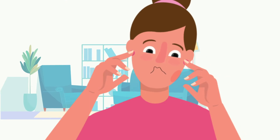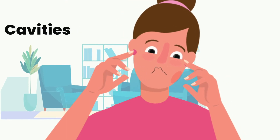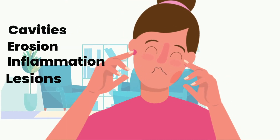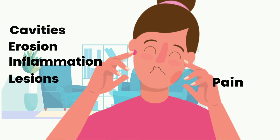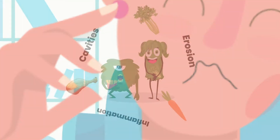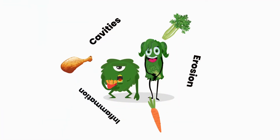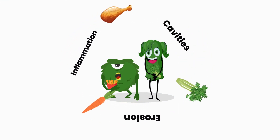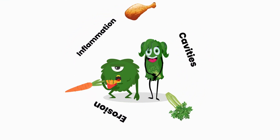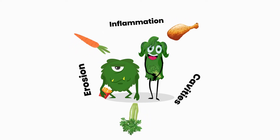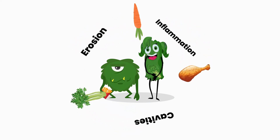Oral disease such as cavities, erosion, inflammation and lesions can cause pain, sensitivity and bleeding. The link between these conditions and your health is bacteria and your diet. So let's explore how Bob and Betty's eating patterns impact your oral health.